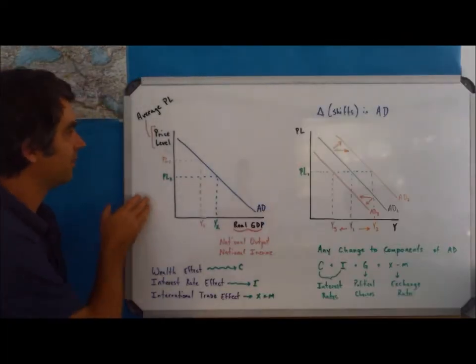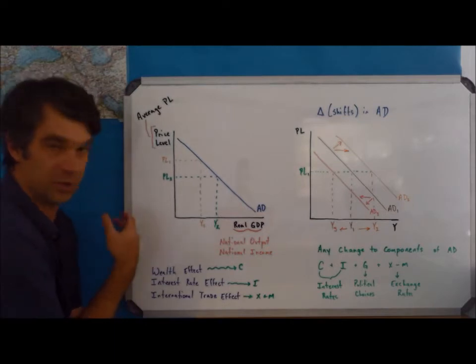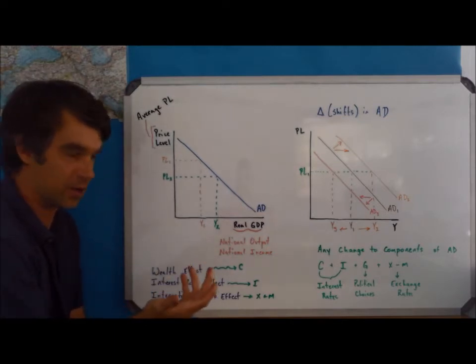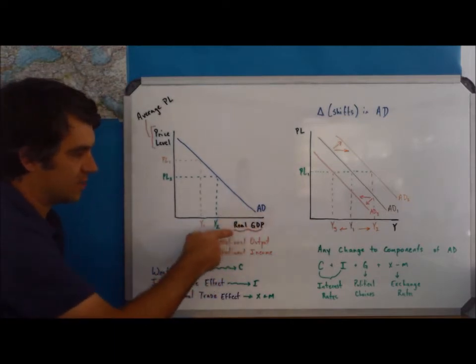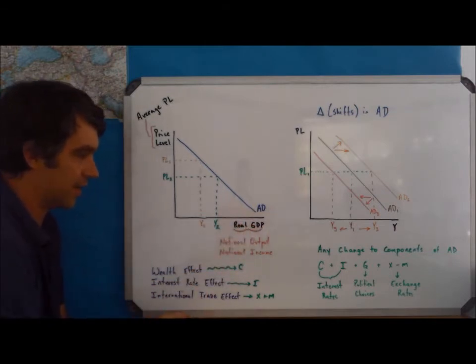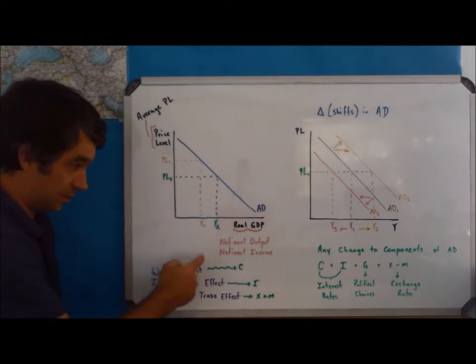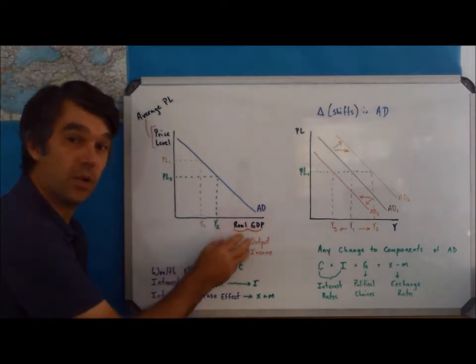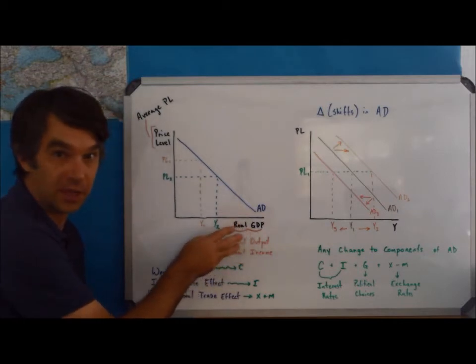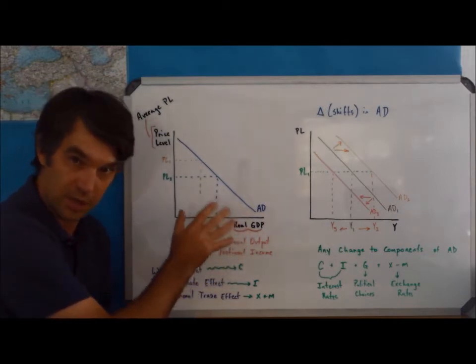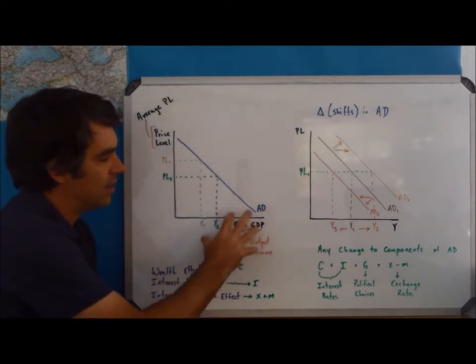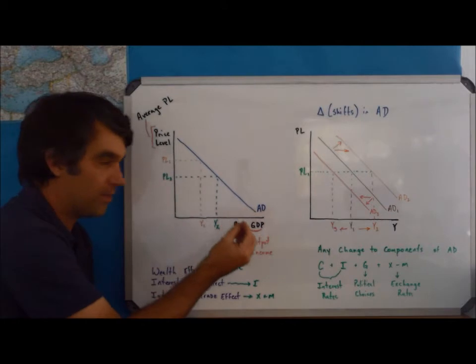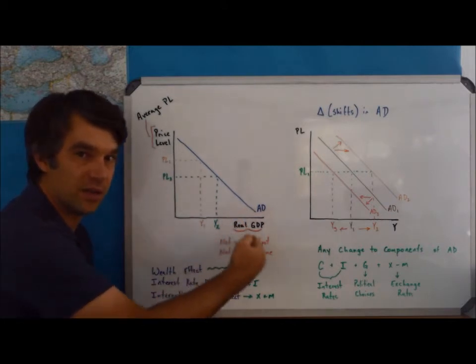When we model aggregate demand, it looks very much like our model for just demand, with a few minor changes. Our x-axis, we're going to call it real GDP. You could also call it national output or national income, real national output, real national income. It doesn't really matter. What's important is that you choose something, you know, look at a book and make sure it's IB verified.